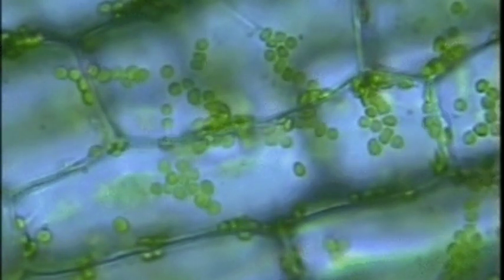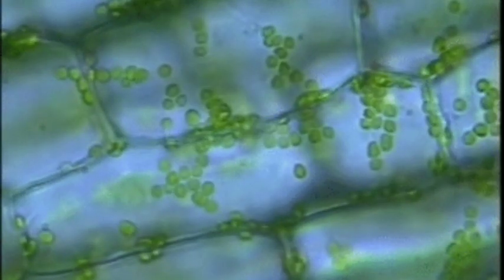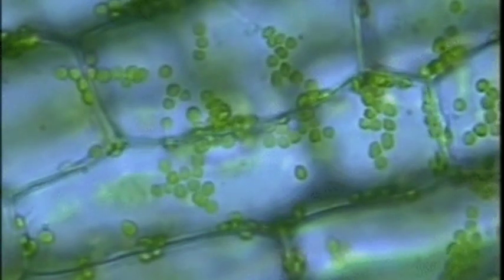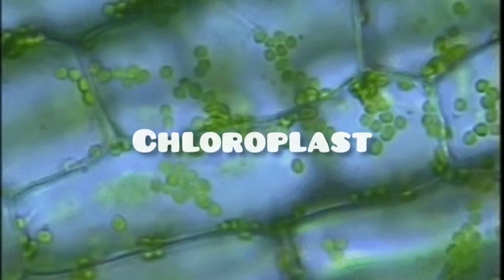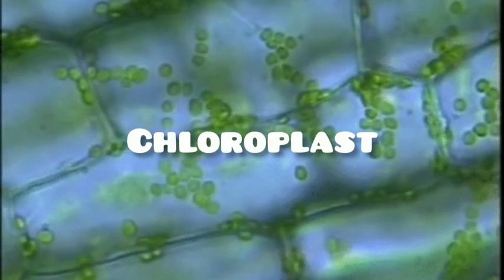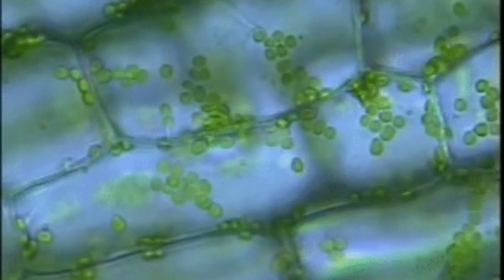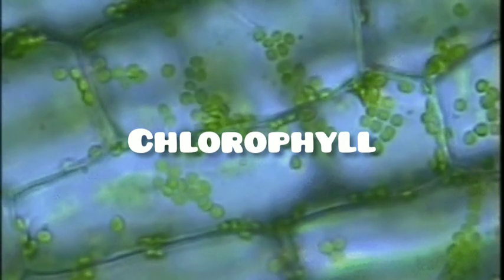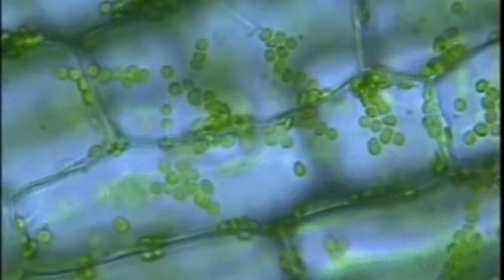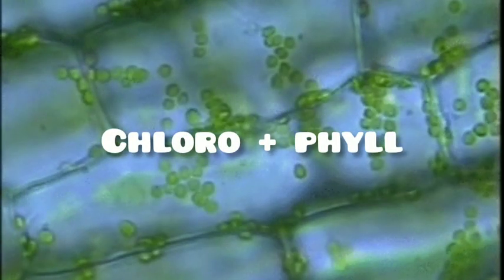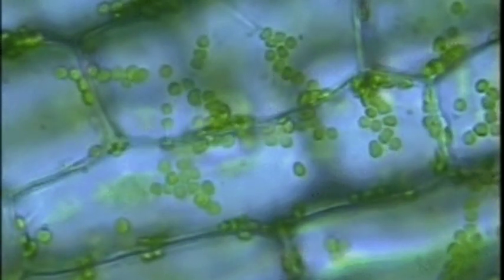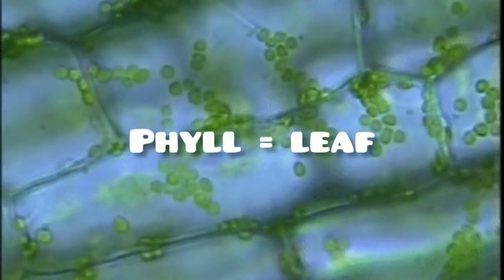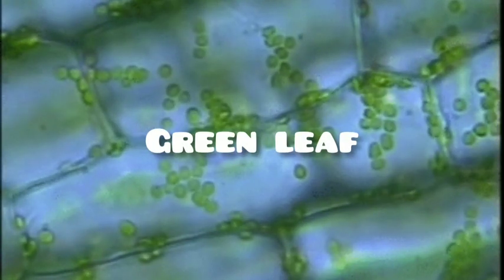You can also see some green substances which are floating in these mesophyll cells. These green colour substances are chloroplasts. They have green colour because of the chlorophyll. The word chlorophyll comes from two words — chloro and phil. Chloro means green and phil means leaf, so chlorophyll means green leaf.